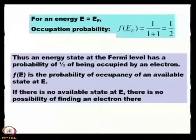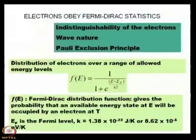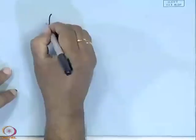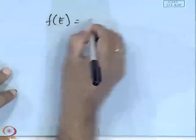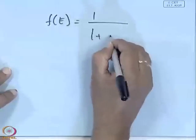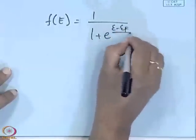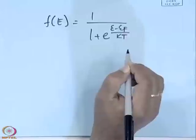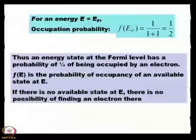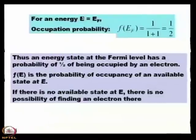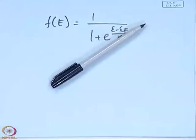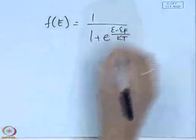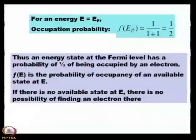The expression is f(E) = 1 / (1 + e^((E - E_f) / kT)). For an energy E equal to E_f, you put E = E_f and what do you find? Half. For E equal to E_f, this becomes half.